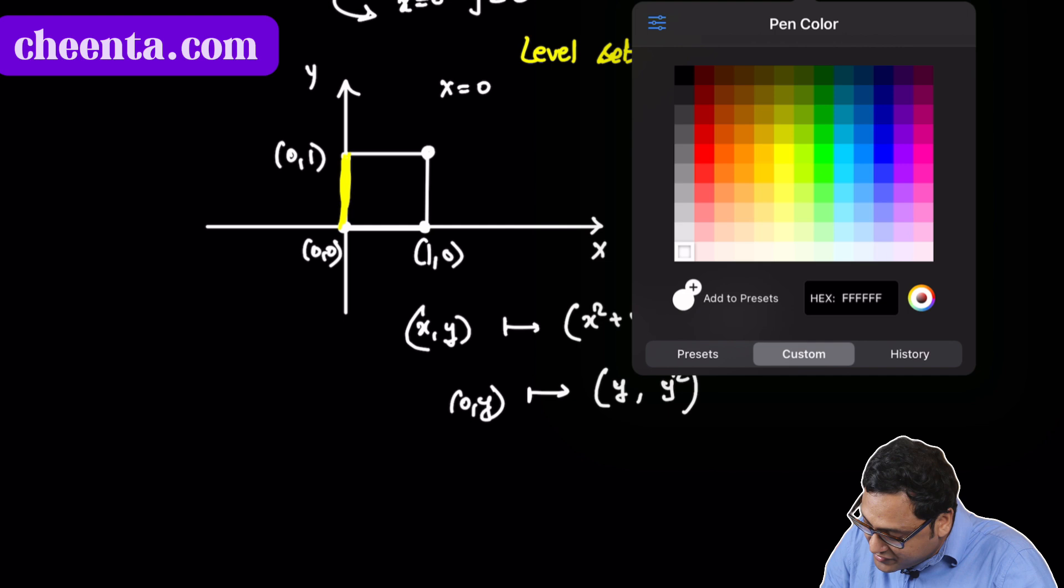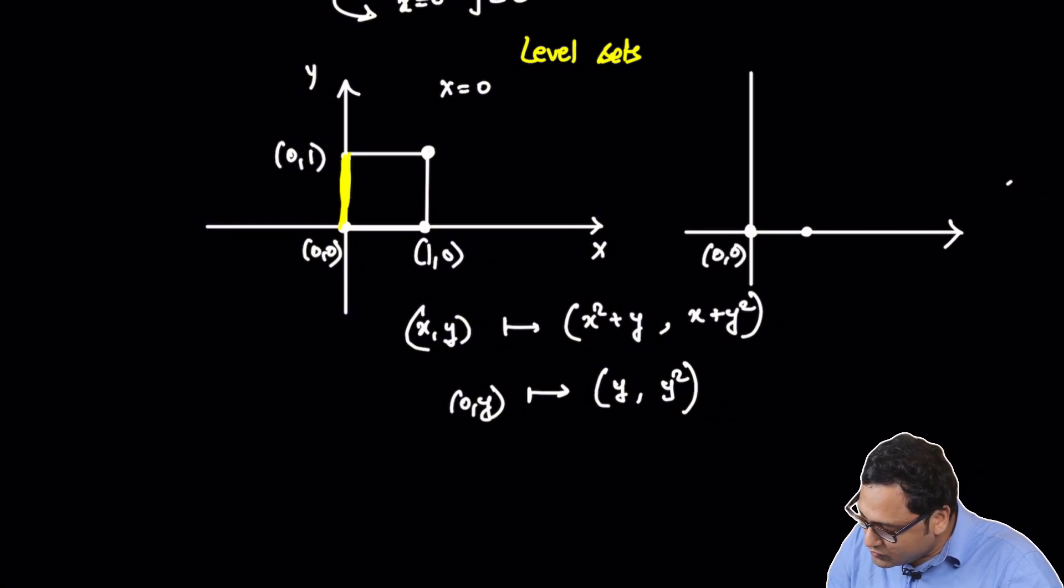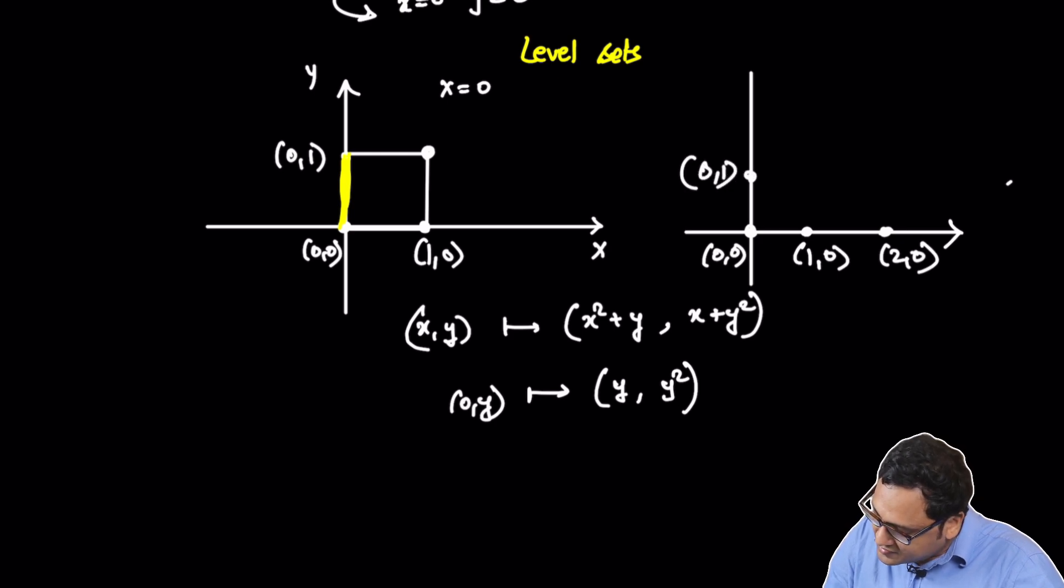So 0 comma y goes to y comma y squared because both x and x squared are 0. Now what is the image of y comma y squared? Well, if I draw this picture in the output space, let's draw it carefully. We know that this is 0 comma 0, this is 1 comma 0, this is 2 comma 0, and this is 0 comma 1, this is 0 comma 2. And the output space is this big box.